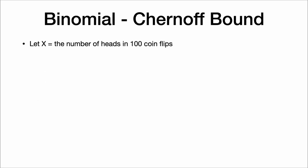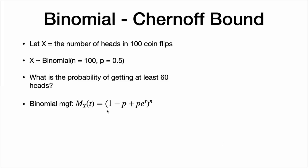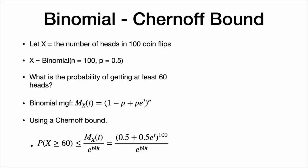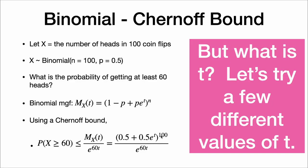Let's try the Chernoff method. The moment generating function for a binomial random variable is (1 minus p plus p times e to the t) all to the n-th power — you can look this up on Wikipedia if you don't want to derive it. Using the Chernoff bound, the probability that x is at least 60 is less than or equal to the MGF over e to the 60t. Plugging in n equals 100 and p equals 0.5, we now need to choose t. We can put in any value of t greater than or equal to zero and this will hold true — but what value of t do we want?